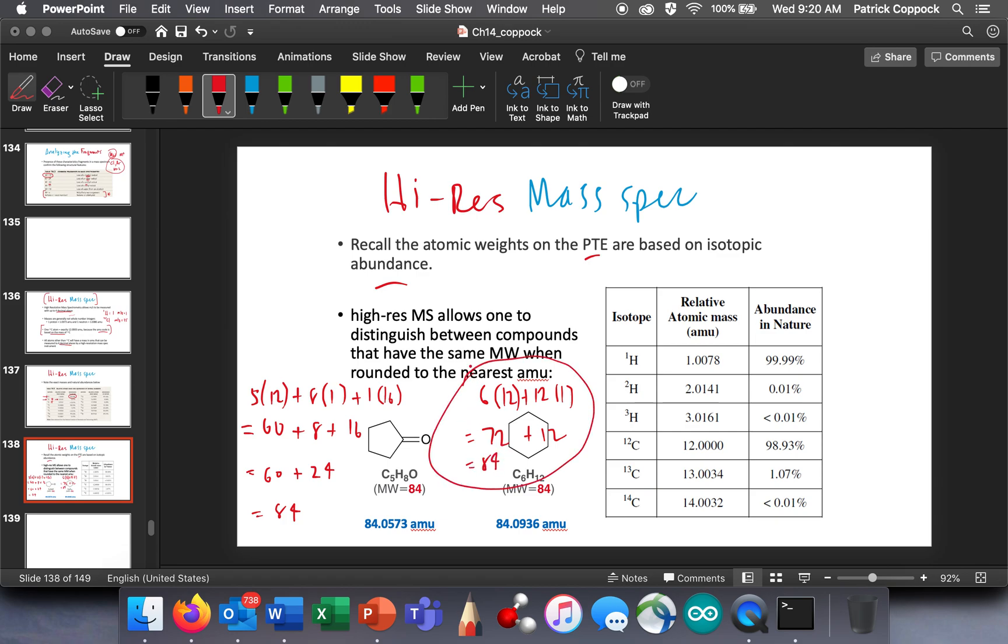So mass spec, then, with a regular mass spec, I wouldn't be able to differentiate between these two because they're both 84. I mean, we would have different fragmentation patterns and so on, but the molecular ion peak would be the same. However, if we can go out to four decimal places, look at that. Then we can tell the difference between those two.